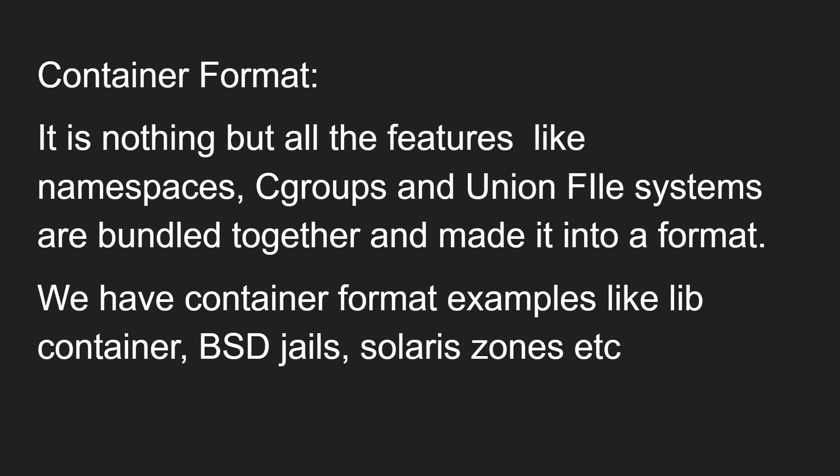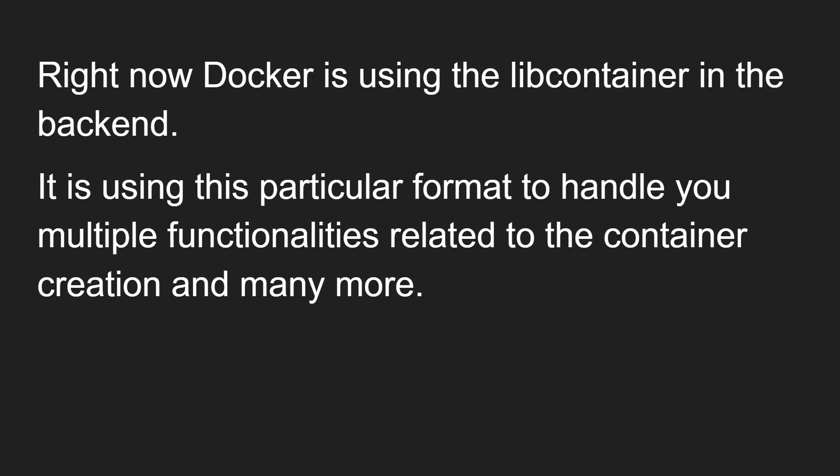As an example from Windows, think of zipping a file — you have 7z, zip, tar.gz — all do the same thing: compressing the file, but in different formats. In the same way, container formats also have different options: libcontainer, bsdgl, and Solaris zones. Each of these contains kernel namespaces, control groups, and file system management. The format that Docker currently uses in the backend is libcontainer — it uses this particular format to handle multiple functionalities related to container creation and more.